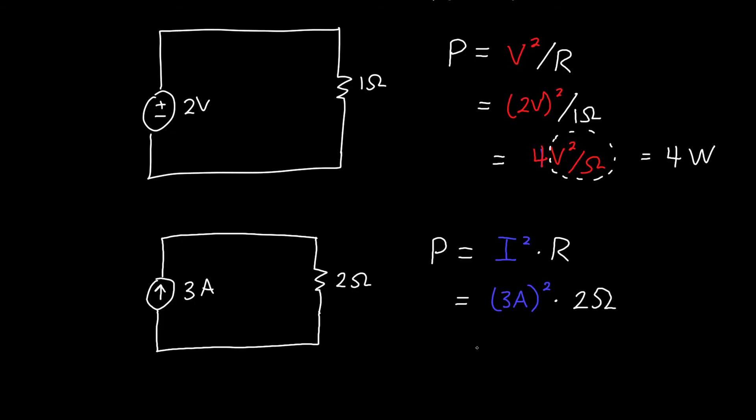And so this ends up being, what is this? Nine amps squared times two ohms, or 18 watts. So amp squared times ohms is another awkward unit. It's the same as volts squared divided by ohms, which is just a watt. So the power dissipated in this resistor is 18 watts.